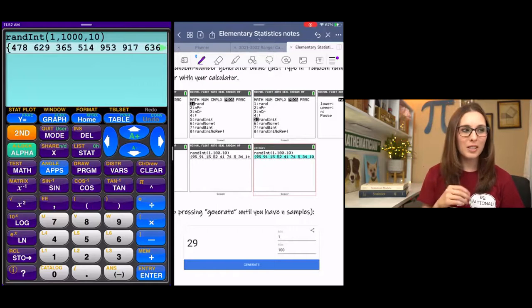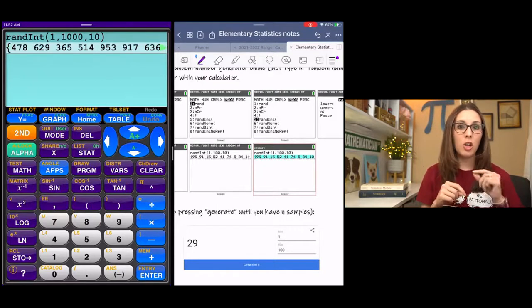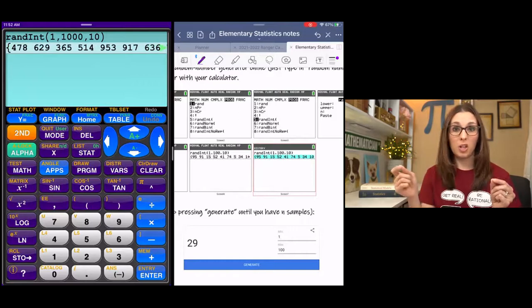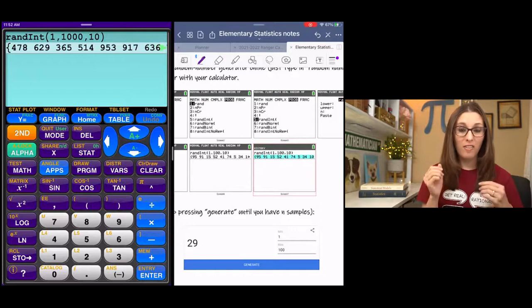So that's the steps: math, probability, random integer, minimum, maximum, how many you want. And so you could even do 50 or 100 or whatever. You can do however many you want. Very easy.